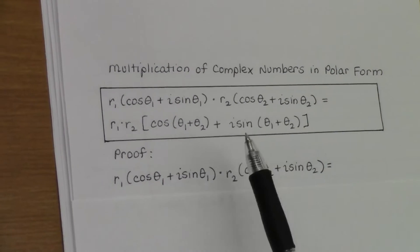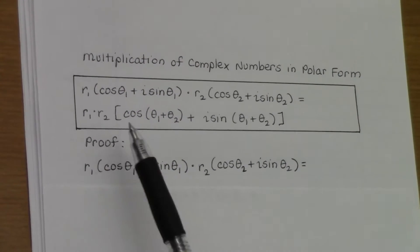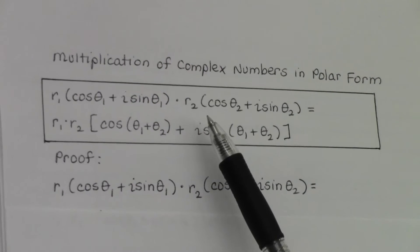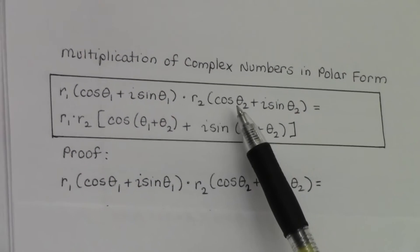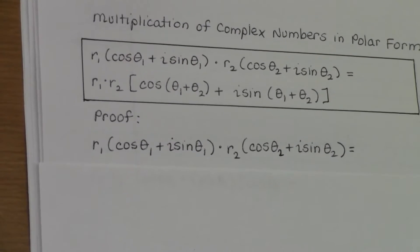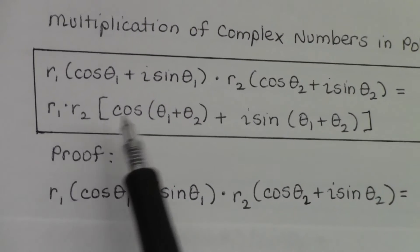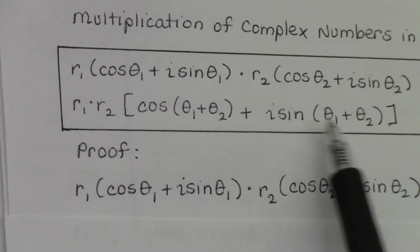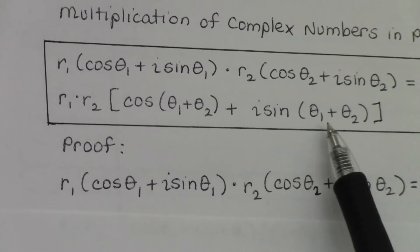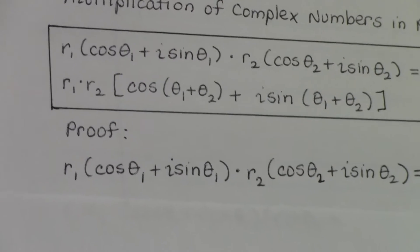Welcome to the proof of multiplication of complex numbers in polar form. I have two complex numbers: the first is r₁ times cosine θ₁ plus i sine θ₁, and the second is r₂ times cosine θ₂ plus i sine θ₂. We're going to prove that the product of those two complex numbers equals the product of the r values times cosine of (θ₁ + θ₂) plus i sine of (θ₁ + θ₂). So you multiply the r values and add the angles.